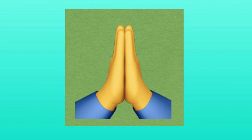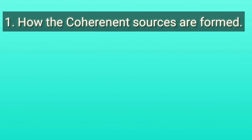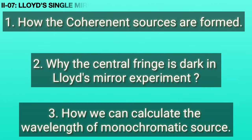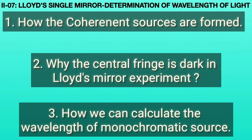Hello everyone, welcome to topic number 07 in unit 2, Interference. This topic is called Lloyd's single mirror experiment. In this experiment, we learn how coherent sources are formed, why the central fringe is dark in Lloyd's mirror experiment, and how we can calculate the wavelength of a monochromatic source. These are the primary topics we are learning from Lloyd's single mirror experiment.